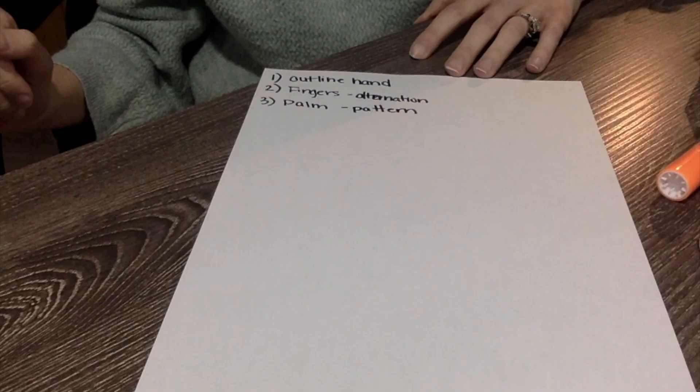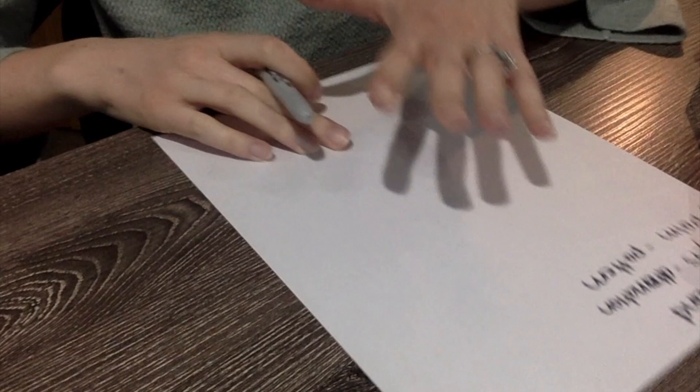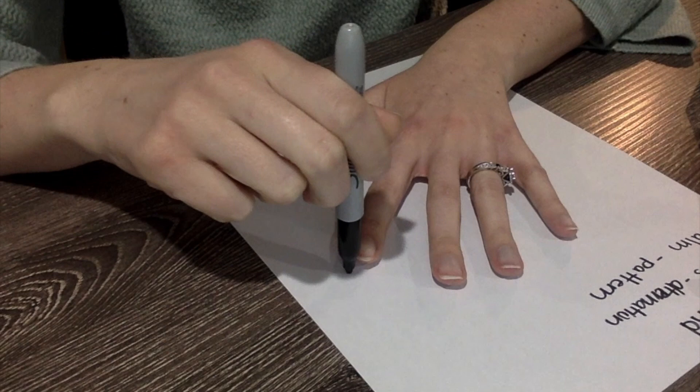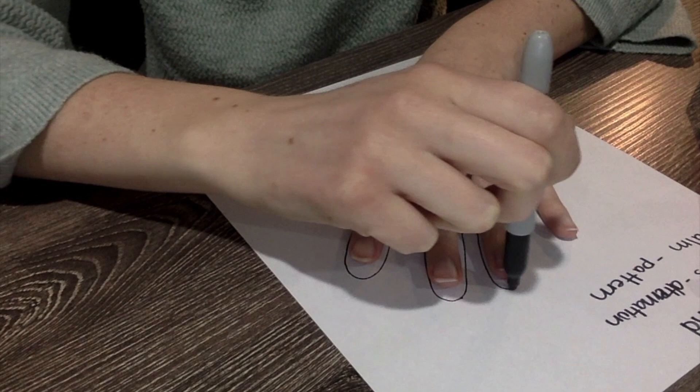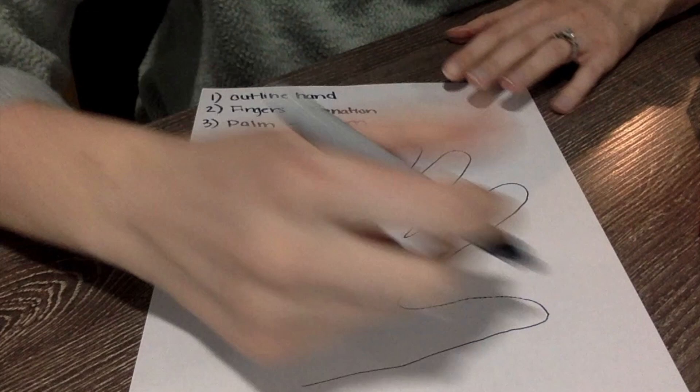Now the next part asks you to do an outline of your hand so let's start with that. If you struggle with this you can always ask someone to help you. I know sometimes it gets tricky to do the outline of your hand, even I have some stumbling marks.